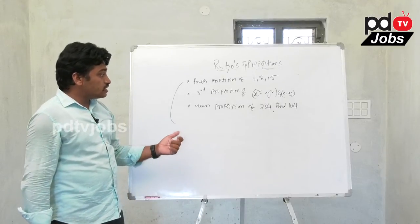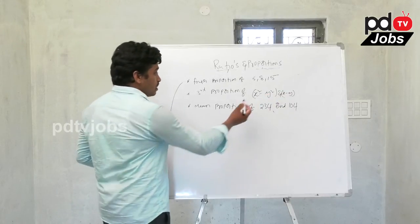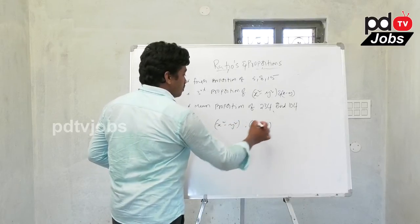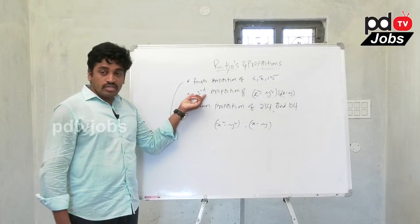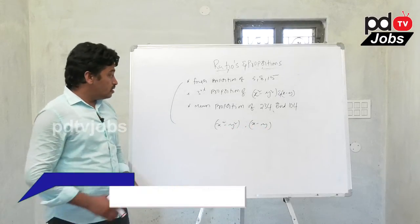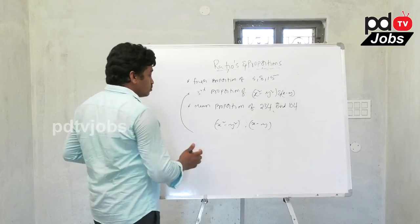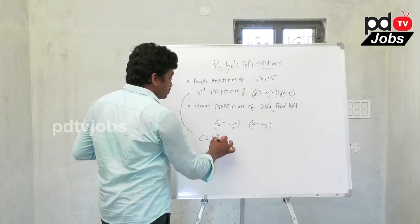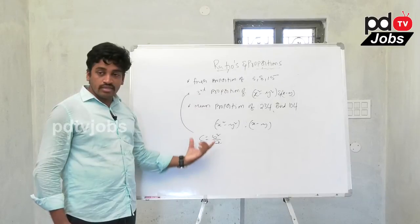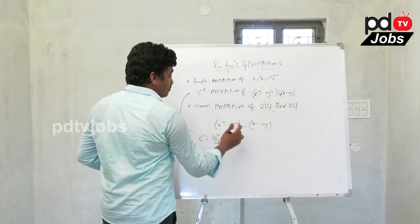For this problem, two values are given: x² - y² and x - y. The formula for third proportion is c = b²/a. We need to find the third proportion of x² - y² and x - y using this formula.